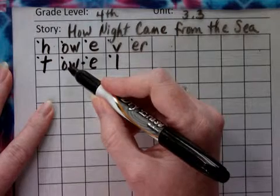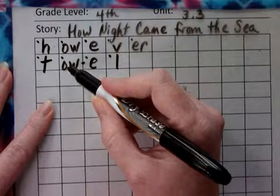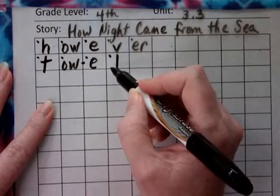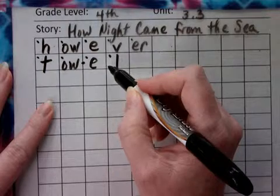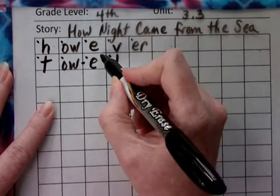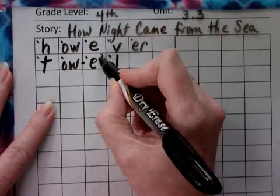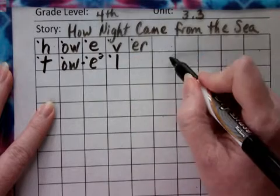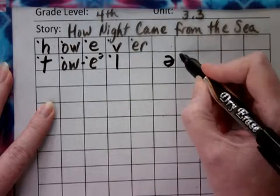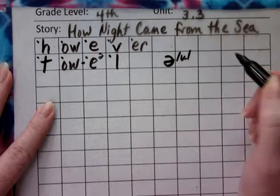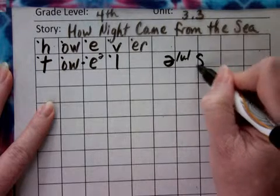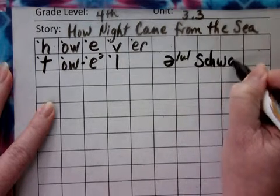This is the accented or stressed syllable. This is the unaccented syllable. In an unaccented syllable, the vowel a lot of the time is going to be the schwa, which is the upside-down E, which says 'uh.' It's called the schwa.